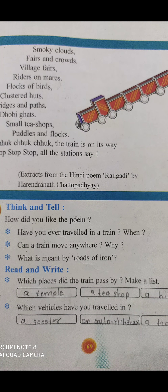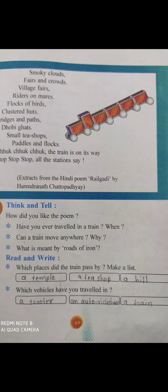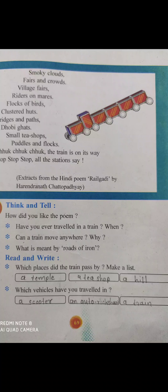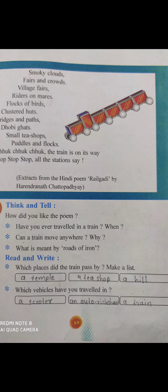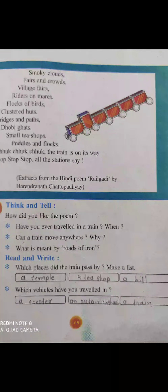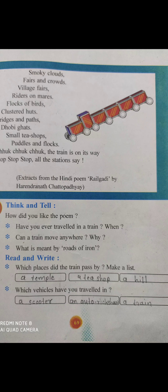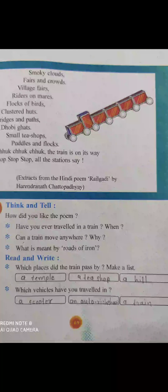Now read and write — which places does the train pass by? Make a list. There are many places from where our train passes, but here we have to write only three places from the textbook. For example: a temple, a tea shop, and a hill. Now, which vehicle have you travelled in? Here you have to write your own answer. For example, I have travelled in a scooter, an auto rickshaw, and a train. You have to write any vehicle you have travelled in.